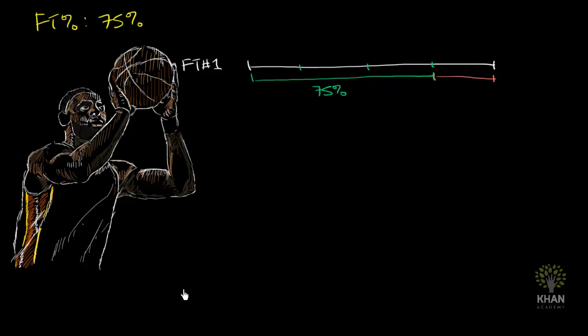Now, what we care about are the ones that keep making the free throws. We want 10 in a row. So let's just focus on the 75% that made the first one. Some of these 25% might make some free throws going forward, but we don't care about them anymore. They're kind of out of the game. So let's go to free throw number two.